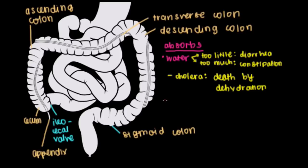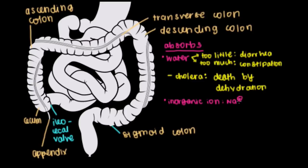The next important things absorbed in the large intestine are inorganic ions — things like sodium or potassium, which we discussed with the small intestine. Sodium was absorbed there as a co-transport mechanism with amino acids to help in their absorption, and that occurs to a smaller extent here in the large intestine as well. Notably, the organ most responsible for absorption of water and inorganic ions like sodium, potassium, and chloride is actually the kidney.